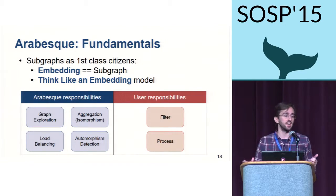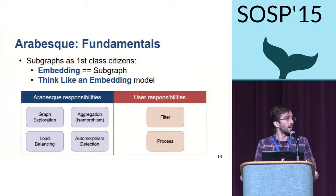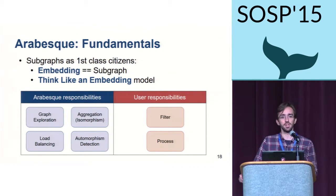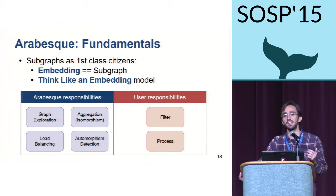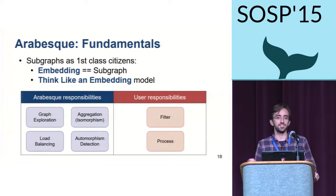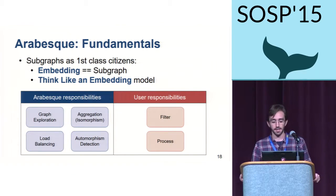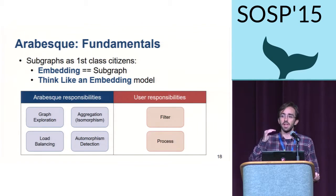The main idea in Arabesque is that we treat subgraphs as our first class citizens. Since subgraphs are also called embeddings in literature, we call our model the Think Like an Embedding model. There is a clear separation between system and user-level responsibilities. The system transparently handles all complex details: graph exploration, aggregation, load balancing, and handling automorphisms. The user simply implements filter and process functions that tell the system where to direct the exploration and what to do with found subgraphs.